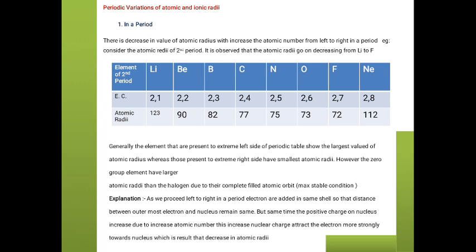We can clearly see that lithium has configuration 2,1; beryllium is 2,2; boron is 2,3; carbon is 2,4; and all the electrons are in the same shell. As we move across the period, atomic radius will decrease.